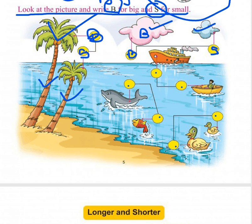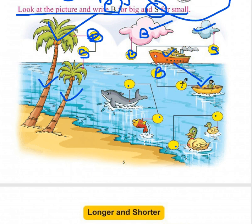Ab hamaare paas hai ek dolphin aur ek fish. Dono mein se kaun si badi hai? This one is big and this one is small. We write B for big and S for small accordingly.